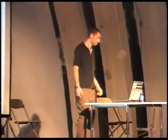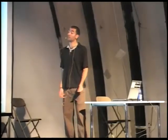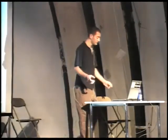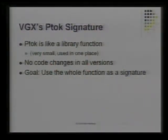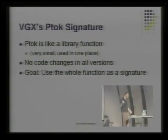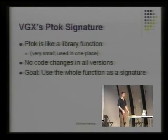We said earlier and we showed the code, the translation in C++, that the PTOC is a small function and it's only used in one place. So there is only one caller and the function is not used widely, so nobody cares about it there and we can easily find it. So the goal here is to use the whole function as a signature.